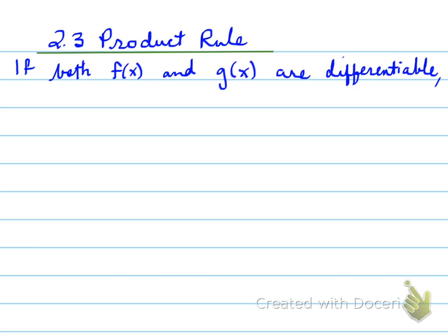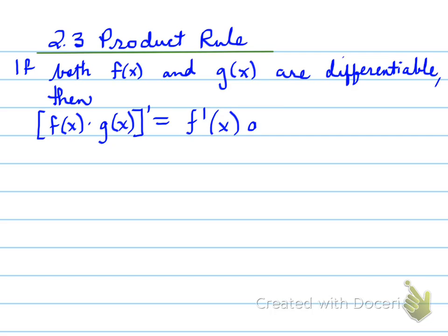Because of this, we can apply something called the product rule. That means that if I take the product of the two functions f and g, and I take the derivative of that product, you can find the derivative using the product rule so that you wouldn't have to expand it. To find the product, you would take the derivative of the first times the second, plus the derivative of the second times the first.